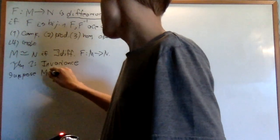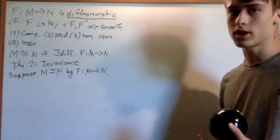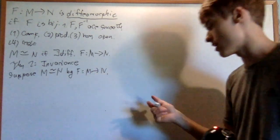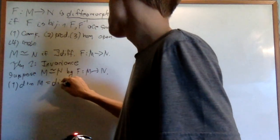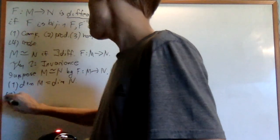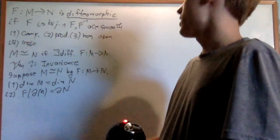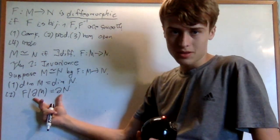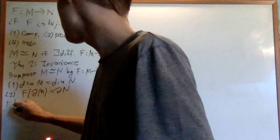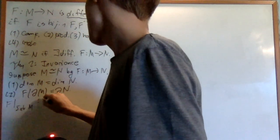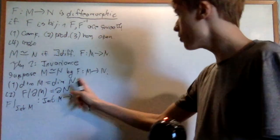Suppose M is diffeomorphic to N via a diffeomorphism F. Then: (1) the dimension of M equals the dimension of N, and (2) F maps the boundary of M onto the boundary of N (for smooth manifolds with boundary). Also, F restricted to the interior of M is a diffeomorphism from the interior of M to the interior of N. I'll prove the first; the second is left as an exercise.